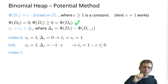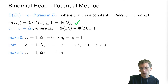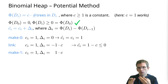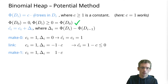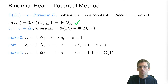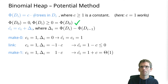Make-one: actual cost is one, and the change in potential is plus c since we create one extra tree. So the amortized cost is one plus c. As long as c is a constant, this is Theta(1).